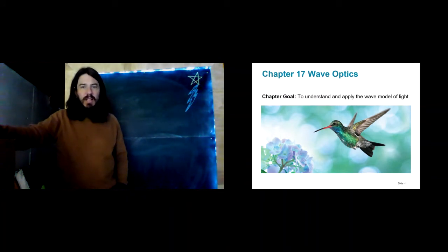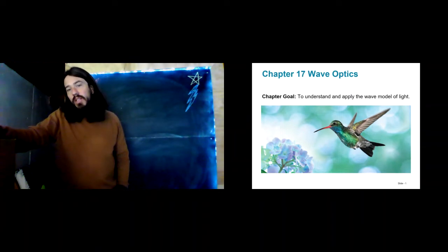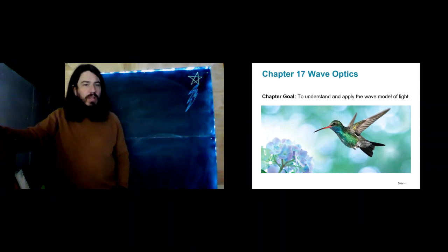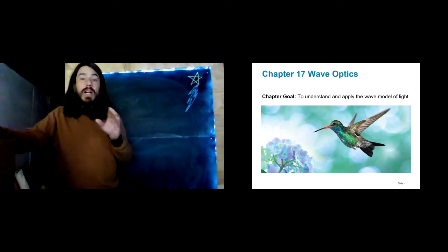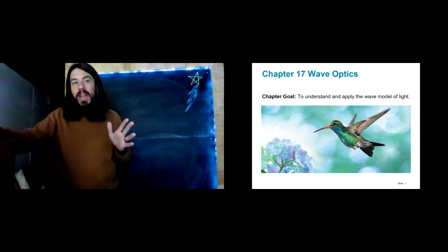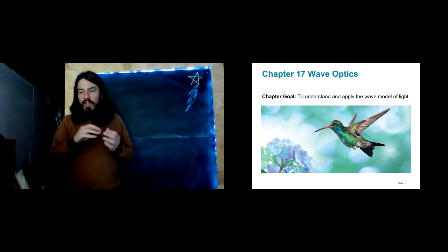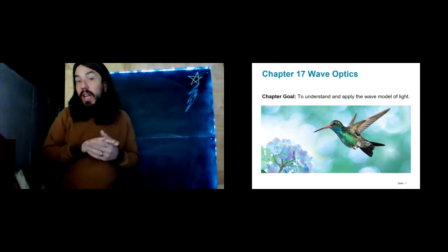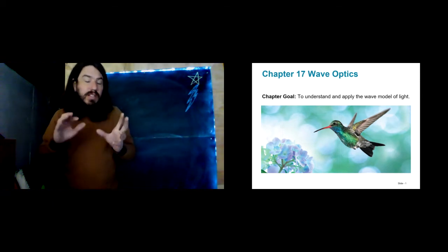Wave optics. Here we see this lovely hummingbird. The colors on a hummingbird are due not so much to pigments in the feathers, but more actually a result of actual structure. It is the structure of those feathers that produce those beautiful colors. Some kinds of birds like magpies and hummingbirds have this iridescent quality where the color might shift depending on the exact angle you are at. That is really a result of reflecting off of ridges in the feathers that are very closely spaced — close enough that they're on the same order of size as the wavelength of light.